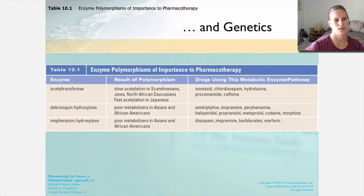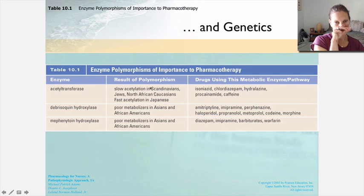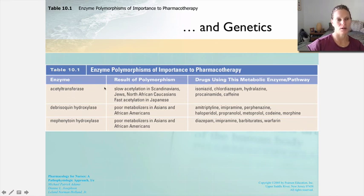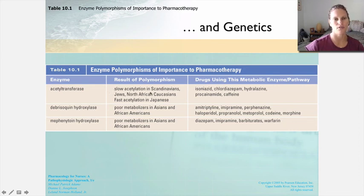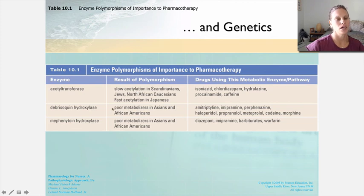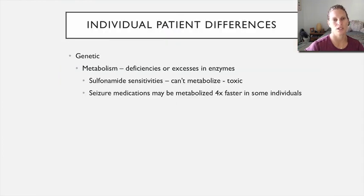Genetics adds another layer of complexity. Genetic polymorphisms — essentially mutations — can significantly alter drug response. One example is the enzyme acetyltransferase, which shows a relatively high degree of penetrance in Scandinavians, Jews, and North African Caucasians, slowing the process of acetylation. Japanese individuals tend to acetylate faster. These genetic differences affect how drugs using that metabolic pathway are processed.